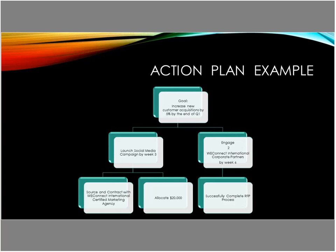The second sub-goal is to engage two WeConnect International Corporate Partners by week six. You have to define what engagement means—does it mean communicating with them or successfully completing an RFP process? You have to determine if that's attainable, whether you're aware of RFPs coming out, and whether they're realistic targets. You might have an action plan based on hiring five new people or starting a new department. The key is that you set a goal and then build a plan with smaller goals within that timeframe.